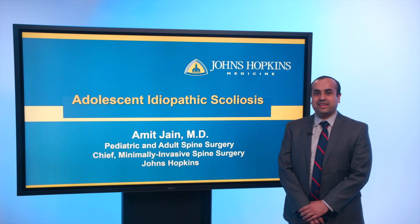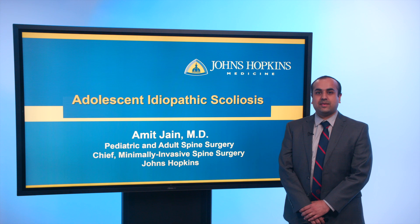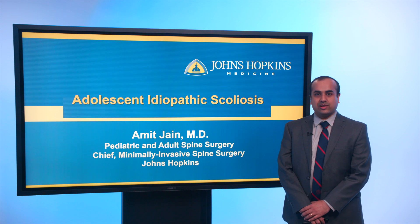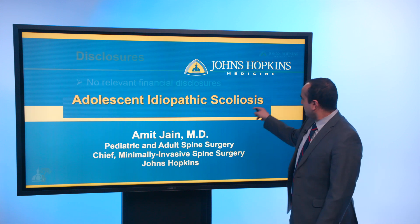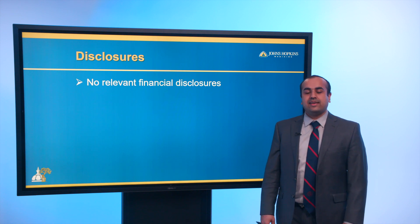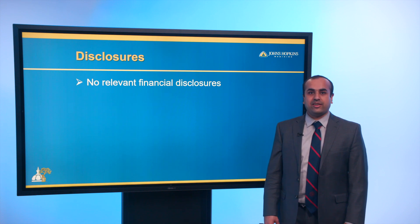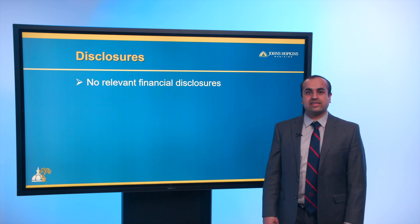Hi, everyone. My name is Amit Jain. I'm a pediatric and adult spine surgeon at Johns Hopkins, the chief of minimally invasive spine surgery, and we'll be talking about adolescent idiopathic scoliosis. I have no relevant financial disclosures for this talk. This talk is geared toward primarily a pediatrics audience — for pediatricians and pediatric care providers who might be seeing these patients and might have questions about how to deal with scoliosis and when to refer.